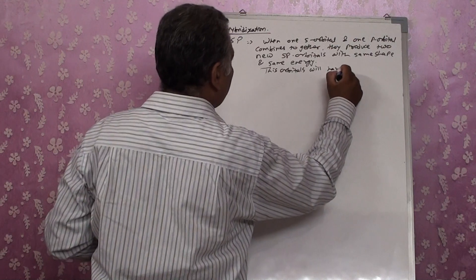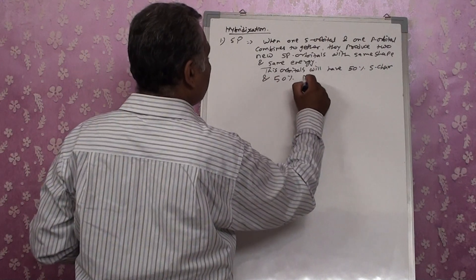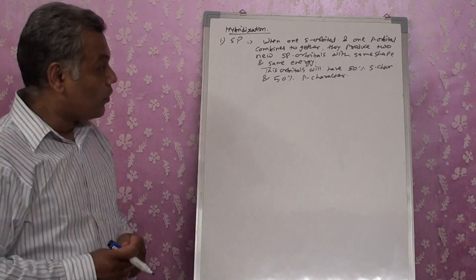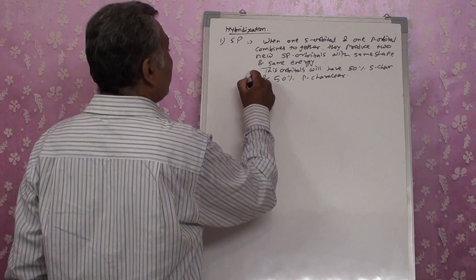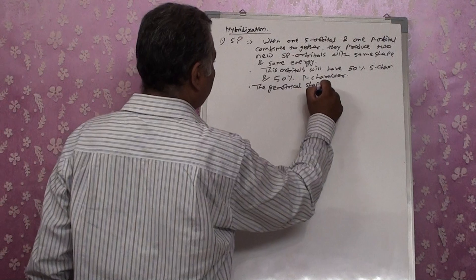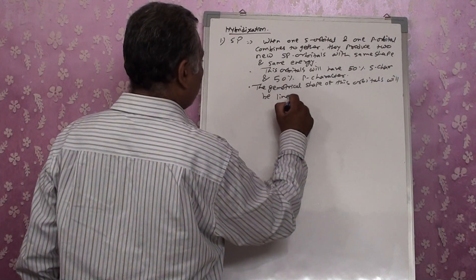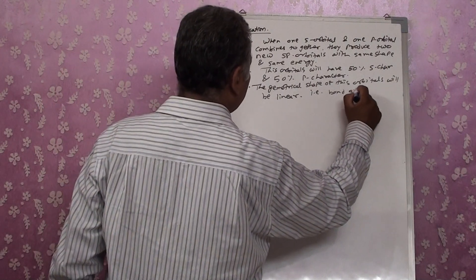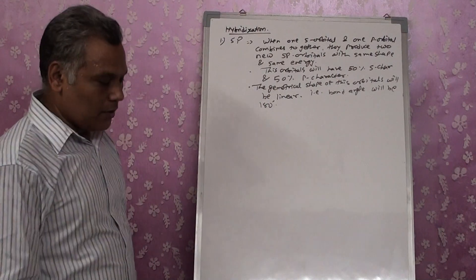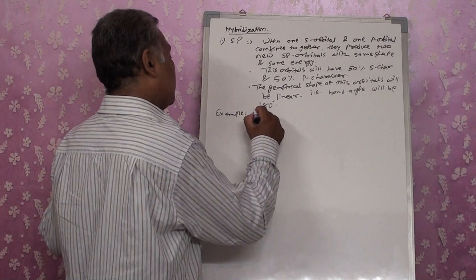These sp orbitals will have 50% s character and 50% p character, since one s and one p are combining. The geometrical shape of these orbitals will be linear, with a bond angle of 180 degrees. As an example, let's take BeCl2. Beryllium is the central atom with configuration 1s² 2s². It has two electrons in 1s and two in 2s; the 2p orbital is completely empty, so one electron moves into the 2p orbital, giving two valence electrons — this is the excited state.